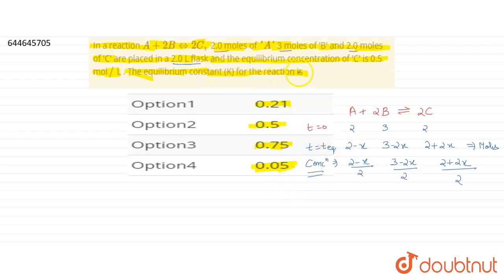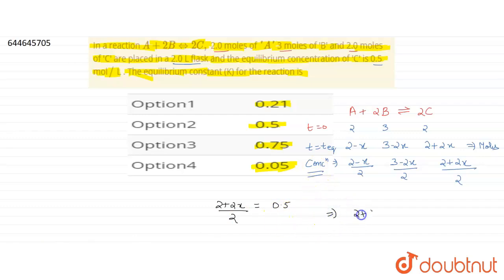We are given that the equilibrium concentration of C is 0.5 mole per liter. So (2 + 2x)/2 = 0.5, which gives 2 + 2x = 1, therefore 2x = 1 − 2 = −1, so x = −1/2.